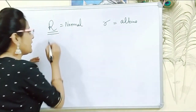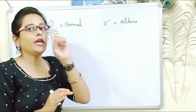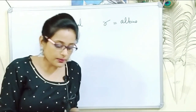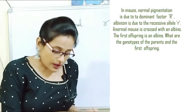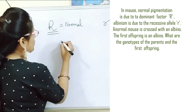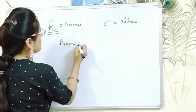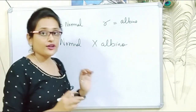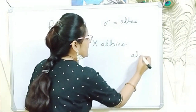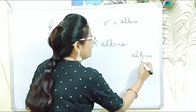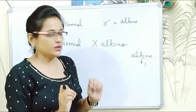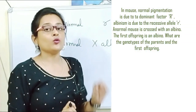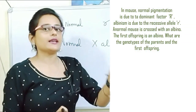From the data given so far, capital R being dominant means even one copy present in the genotype will result in normal pigmentation. The question says: a normal mouse is crossed with an albino, and the first offspring is an albino. So the F1 generation's first offspring is albino. The question asks: what is the genotype of the parent as well as the offspring?